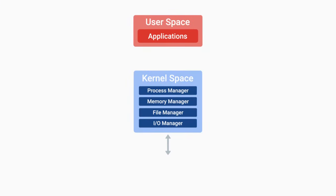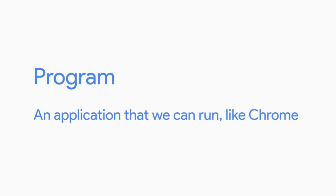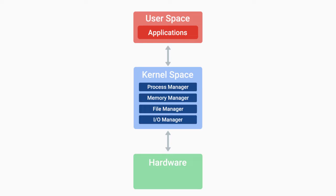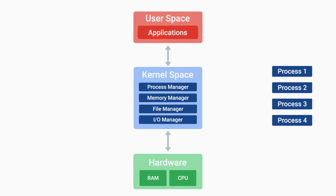One of the most important tasks that our kernel performs is process management. A process is a program that's executing, like our internet browser or text editor. A program is an application that we can run, like Chrome. We can have many processes of the same program running at the same time — think of how many Chrome windows you can open. When we want to run our programs, we have to dedicate computer resources to them, like RAM and CPU. Our kernel has to manage our resources efficiently so that all the programs we want to use can be run.